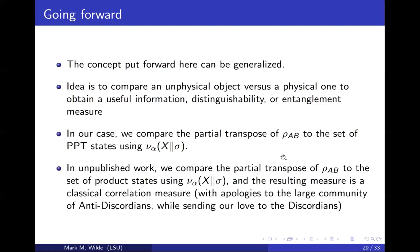Something we've been working on: we can compare the partial transpose of rho_AB to a product state using nu_alpha, and the resulting measure is a classical correlation measure. This is relevant to the concept of quantum discord — there's a whole literature on classical correlation and quantum discord, and there were funny reactions by the larger quantum information community to this work, which I call the anti-discordians. This idea is relevant to the concept of quantum discord, so we're sending our love to the discord community on this one.